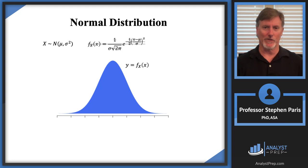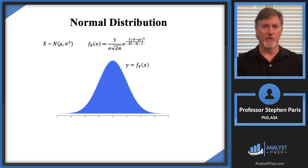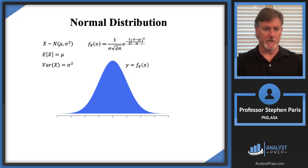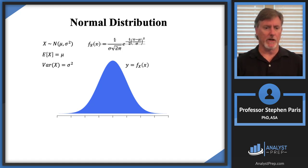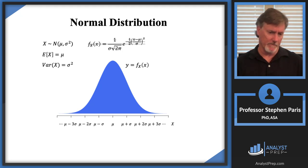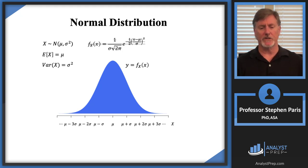I don't suggest that you memorize the density function — you won't need to know it. But if we look at the parameters for the normal distribution, mu and sigma squared, they represent the same as what we've been using: mu is the mean of the random variable X, and sigma squared is the variance. On the horizontal axis, the mean occurs at the peak of the bell-shaped curve, with marks representing how many standard deviations you are to the right and left of the mean.